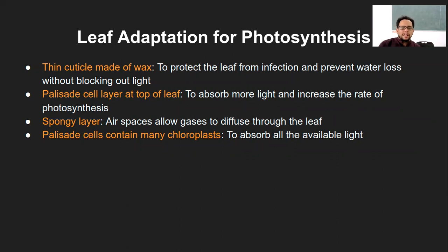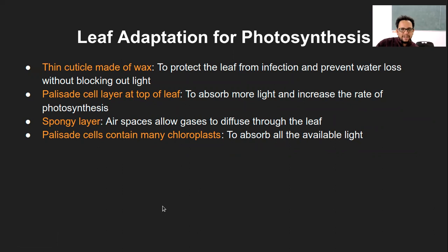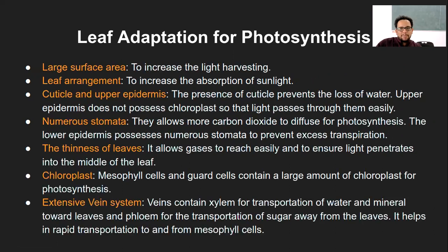Palisade mesophyll cells are columnar cells just below the upper epidermis that absorb more light and perform more photosynthesis. Spongy mesophyll has air spaces that allow gases to diffuse through the leaf — that is one adaptation the plant has received over the course of evolution. Palisade cells also contain many chloroplasts, absorbing all the light falling onto them. These are the various leaf adaptations present in the leaf structure of a plant.